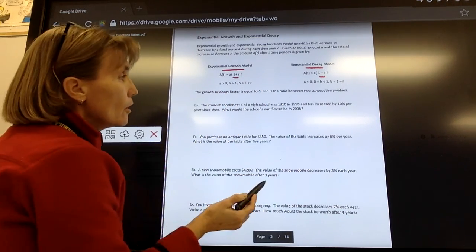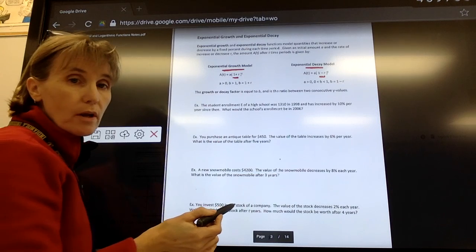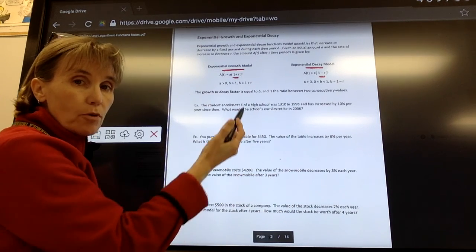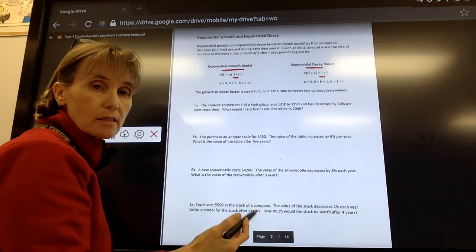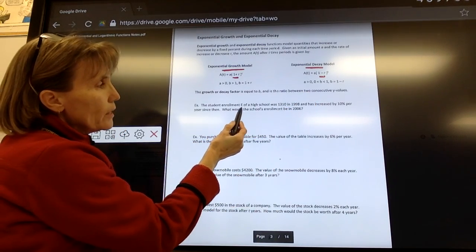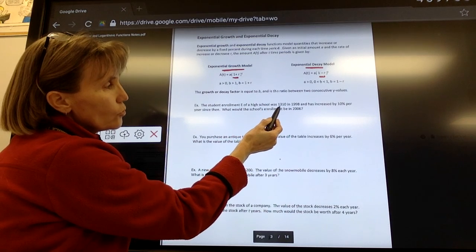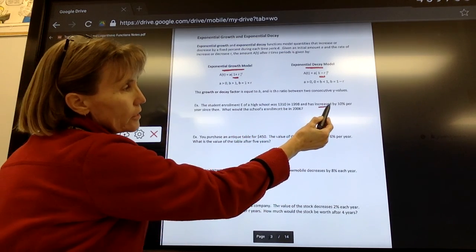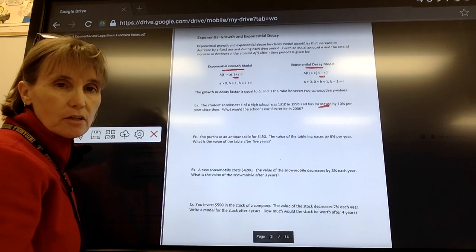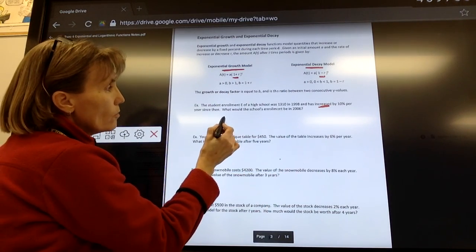Now, how we apply that formula? You're going to read the context of your problem and decide whether we're talking about growth, something's increasing, or decay, something's decreasing. It says the student enrollment E of a high school was 1,310 in 1998, and it has increased by 10% per year since then. So that's an increase. We're going to use the growth model.